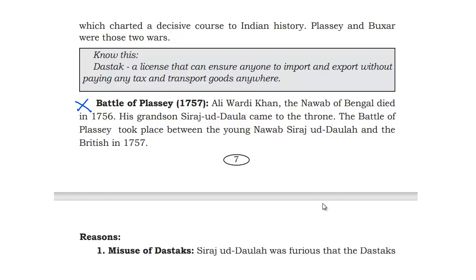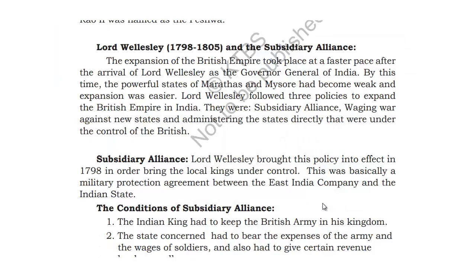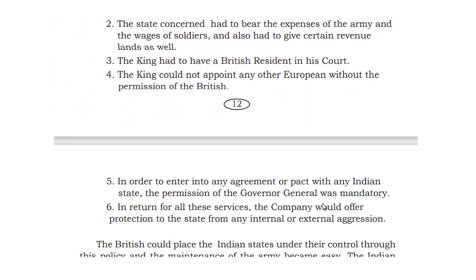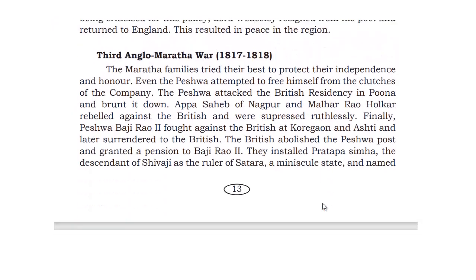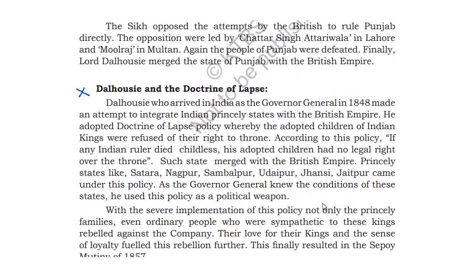Moving to Chapter 2, 'Extension of British Rule,' the topics that have been deleted are Subsidiary Alliance and Doctrine of Lapse. Let us mark these in the textbook by crossing them out. These two topics are not there for this academic year from this chapter, so don't read them.